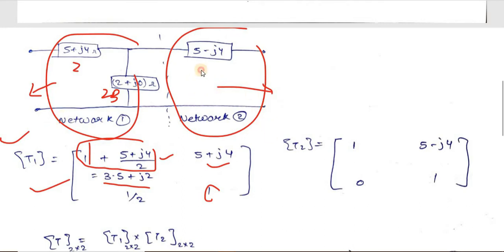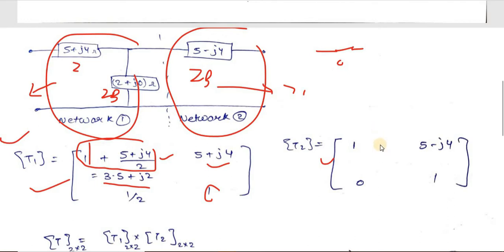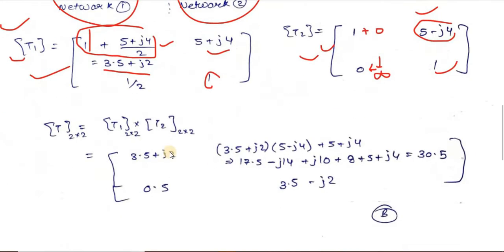For the second network, ZB is not visible — it is an open circuit, so we treat ZB as infinite impedance. With ZA = 5−j4 and ZB = ∞: A = 1 + ZA/ZB = 1 + 0 = 1. B = ZA = 5−j4. C = 1/ZB = 1/∞ = 0. D = 1. This is the T2 transmission parameter matrix.